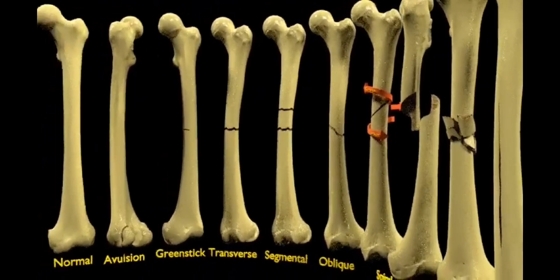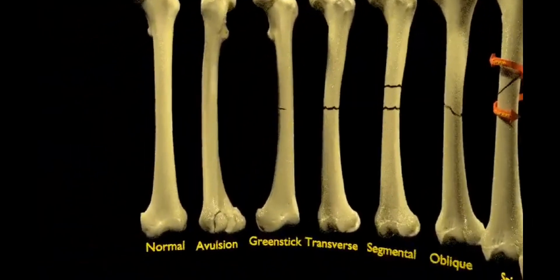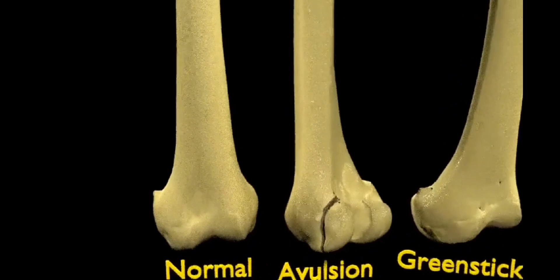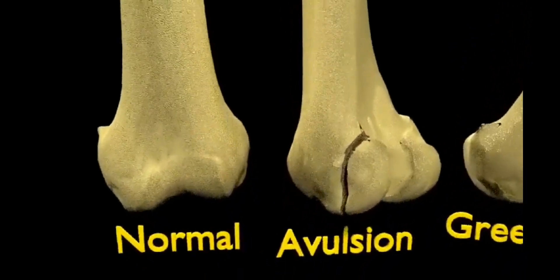They can be categorized into displaced fracture, the bone breaks into two or more pieces and moves out of alignment. Non-displaced fracture, the bone breaks but does not move out of alignment.